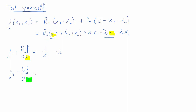Let's move to the second partial derivative. Now x2 is our variable and everything else is considered a constant, so it is these two terms that contribute to the partial derivative. The result is 1 over x2 minus lambda.